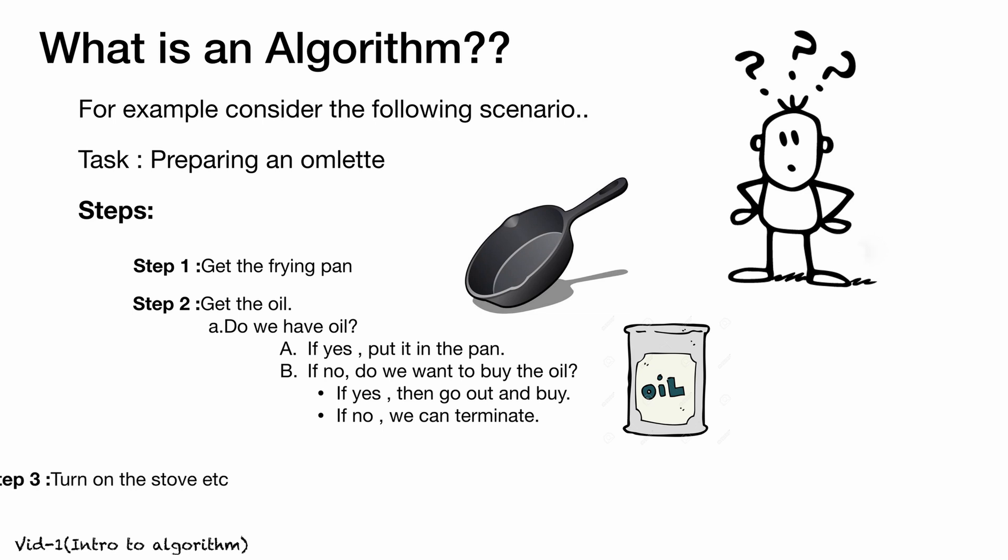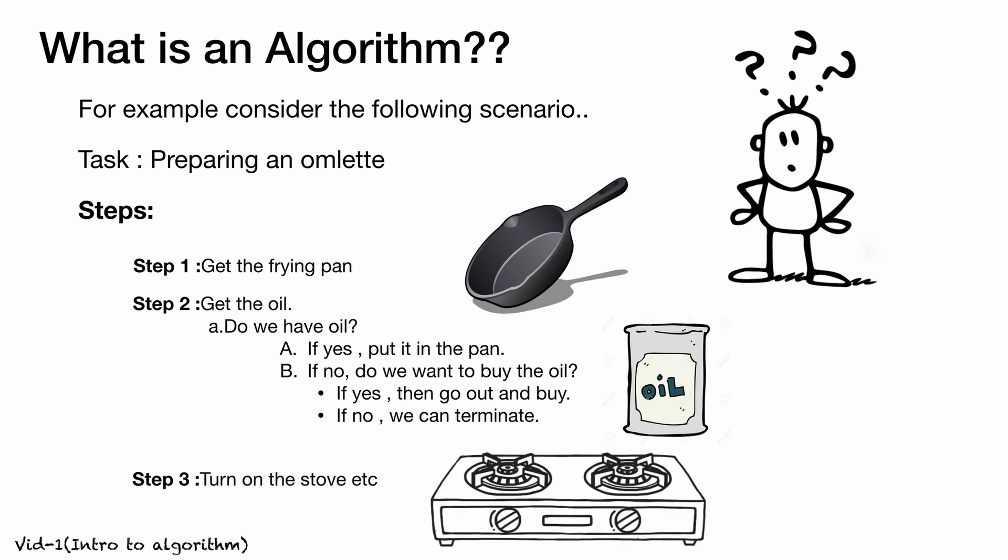Next, we light the stove and make an omelette. These are all the steps we follow for preparing an omelette. From this example, we can draw the conclusion that we follow a series of steps to complete the task of preparing an omelette.